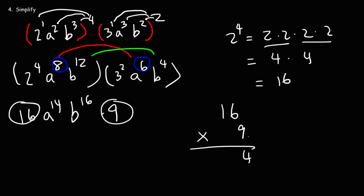So let's do this the old-fashioned way. 9 times 6 is 54. Write the 4, carry the 5. 9 times 1 is 9, plus 5, that's 14. So we get 144. The final answer in this example is 144 A to the 14th B to the 16th. So that's how you could simplify algebraic expressions.